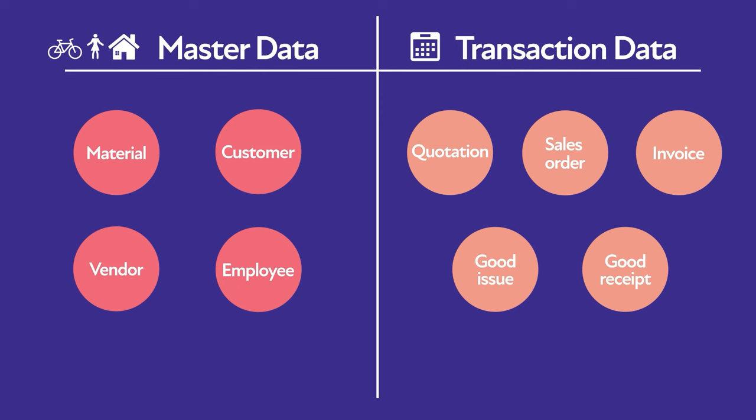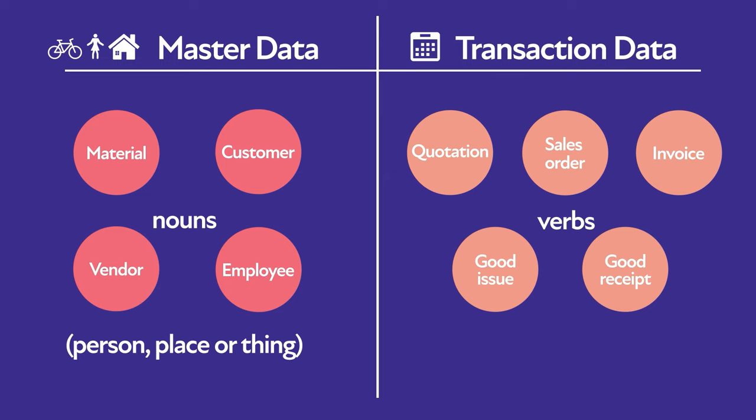We can compare master data to nouns and transaction data to verbs. One describes a person, place, or thing, and the other describes an action or event that those nouns participate in.